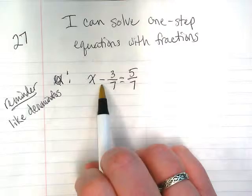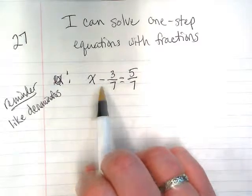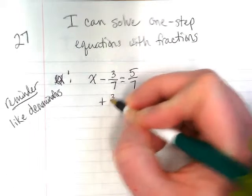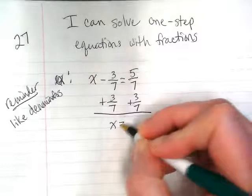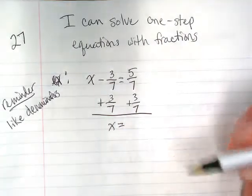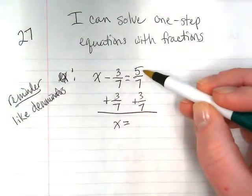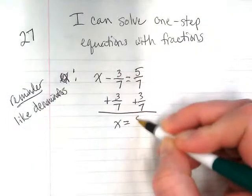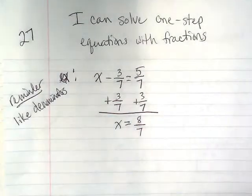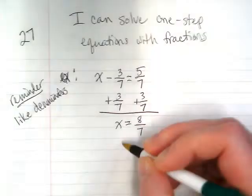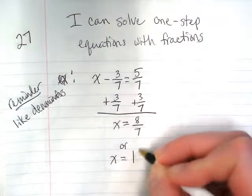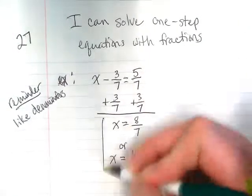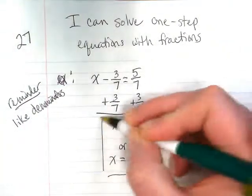So X minus 3 7ths is a subtraction, so we're going to add the 3 7ths. And because it's an equation, we do it to both sides. On the left side of our equation, we're left with X. And on the right side, we have 8 over 7. We can leave it as 8 over 7, or we can say X is equal to 1 and 1 7th. Either of those is the correct answer.